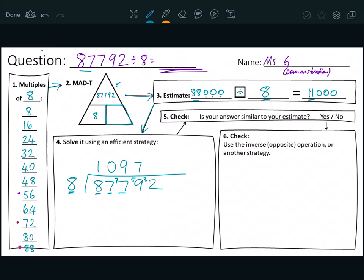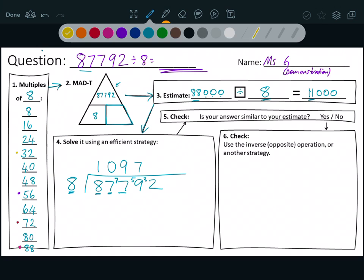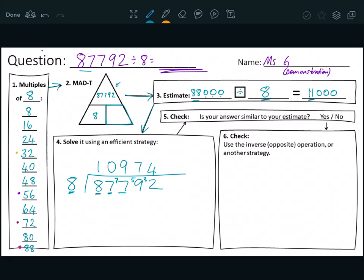Now I've got 32 left. So which number on my divisors is friendly? Oh, look at that, 32. So I'm going to say eight times four is 32. And so I think my answer is going to be 10,974. That's pretty close to my estimate. So 10,974 is pretty close to 11,000. So I'm feeling pretty confident right now.